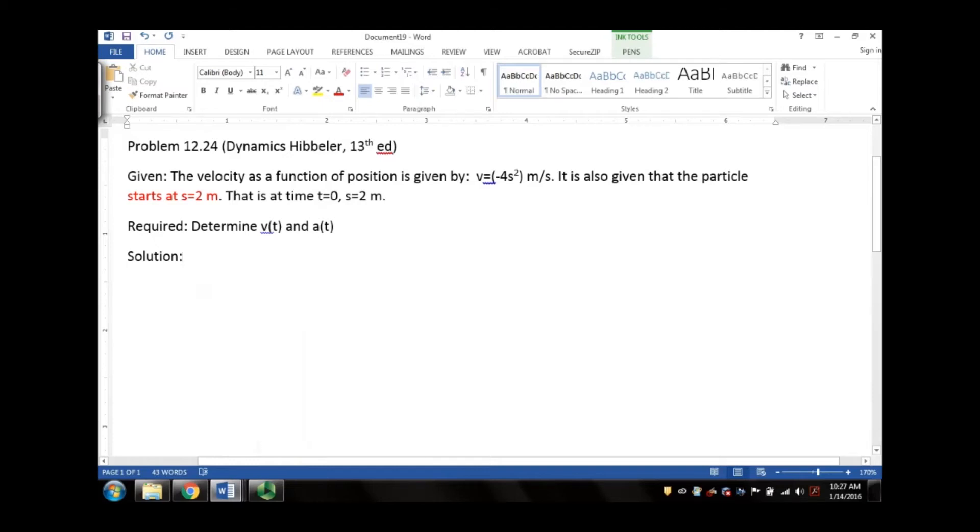This is problem 12.24. It's given that a velocity of a particle as a function of position is given by v equals negative 4s squared meters per second.